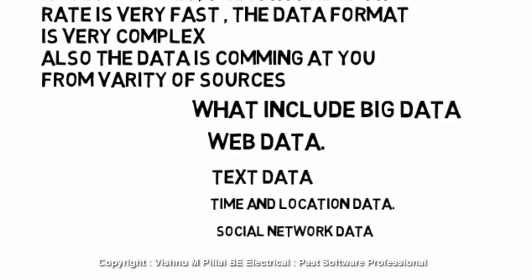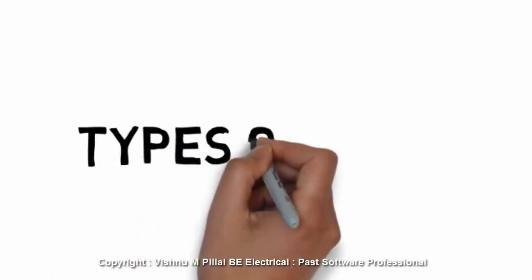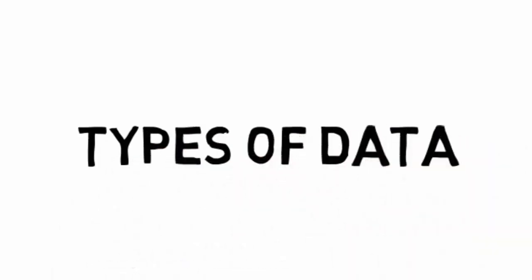All these kinds of data or information which is generated from all the website usage, different kinds of texts like hundreds and thousands of books, time and location data of various different devices working together, and social networking data—all these can be classified as big data because they are huge volume, they are generated at a very fast rate, and the data is very complex. It is not possible for normal computing software systems to analyze this data in a reliable or short period of time.